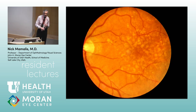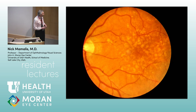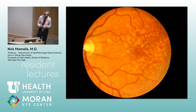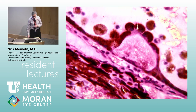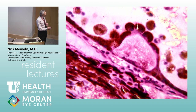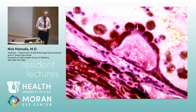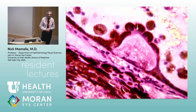Looking at this fundus photo: lots of drusen in the macula near the fovea. Where are drusen located pathologically? Between the RPE and Bruch's membrane. Let's talk about Bruch's membrane — it sits between the RPE and the choroid.